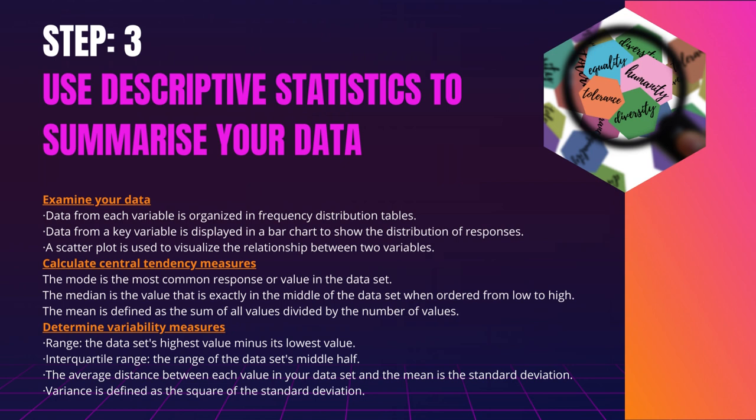Extreme outliers can also produce misleading statistics, so dealing with these values may necessitate a systematic approach. Calculate Central Tendency Measures. Measures of Central Tendency describe the location of the majority of the values in a data set. There are three main measures frequently reported: 1. The mode is the most common response or value in the data set. 2. The median is the value exactly in the middle of the data set when ordered from low to high. 3. The mean is defined as the sum of all values divided by the number of values. However, depending on the distribution's shape and measurement level, only one or two of these measures may be appropriate.